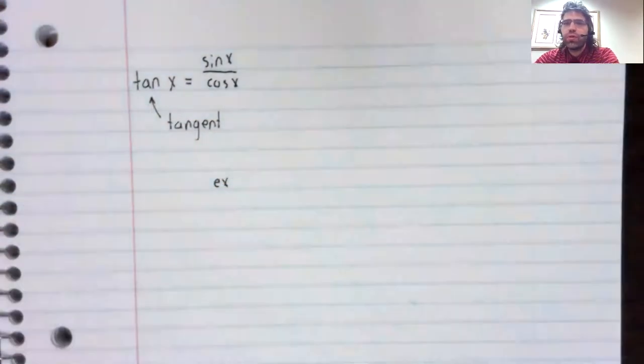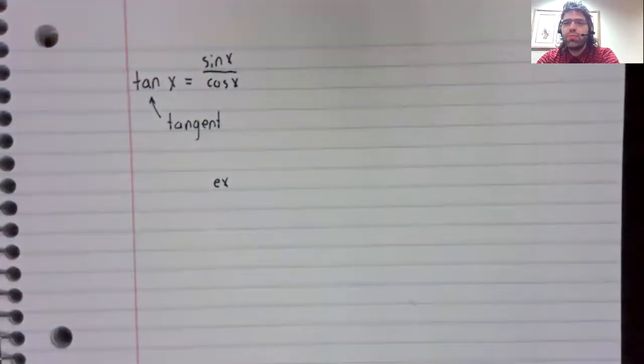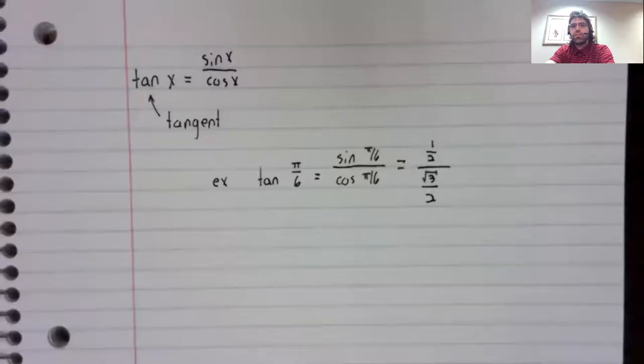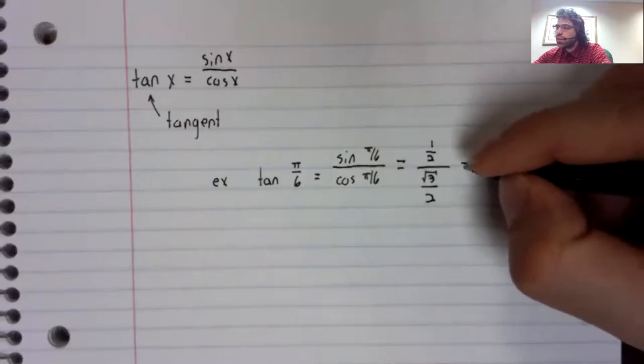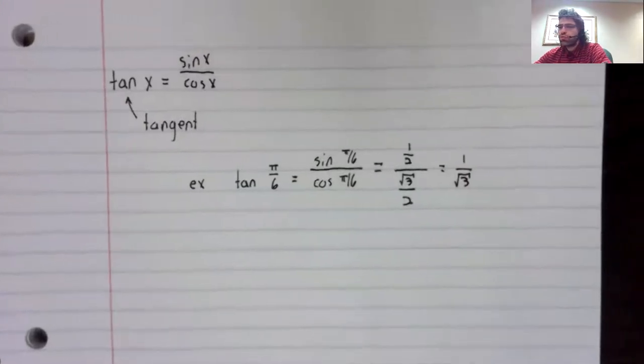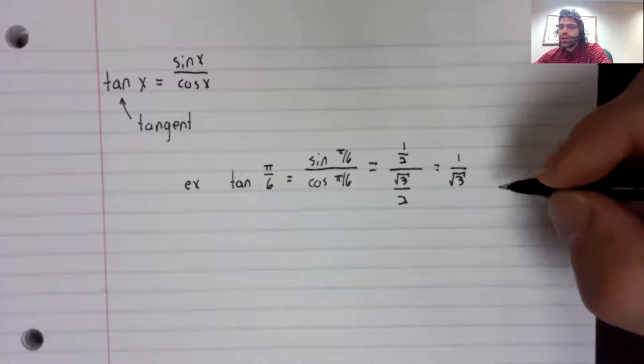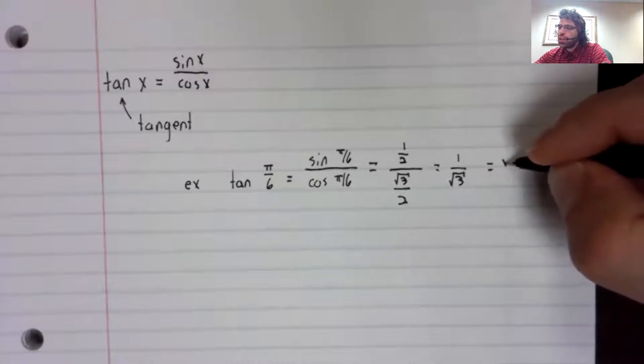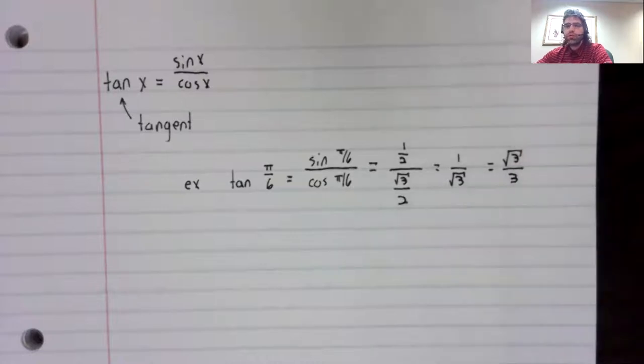So, for example, the tangent of pi divided by six is the sine over the cosine, which we can then simplify a little. That's one over the square root of three. If we prefer not to have square roots in the denominator, the square root of three divided by three.